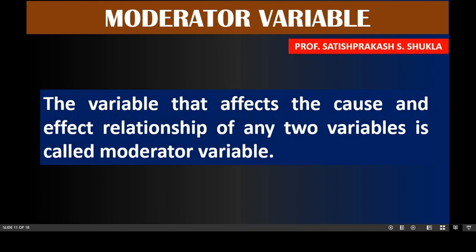Now we will see the meaning of moderator variable. The variable that affects the cause and effect relationship of any two variables is called a moderator variable. It means the cause and effect relationship between independent and dependent variable is affected by a moderator variable. If a moderator variable is present in the study, the researcher must take care of it by studying theoretical literature or reviewing previous research.